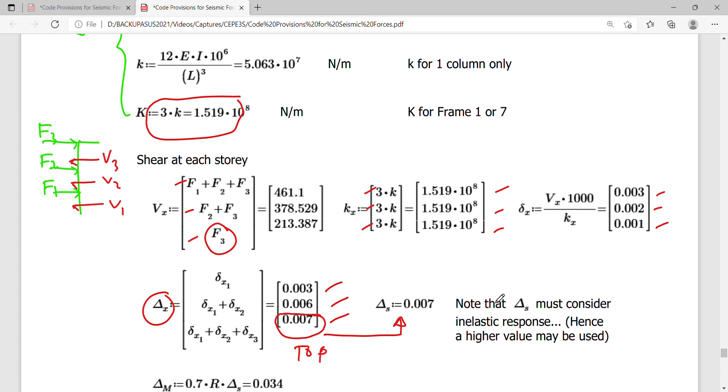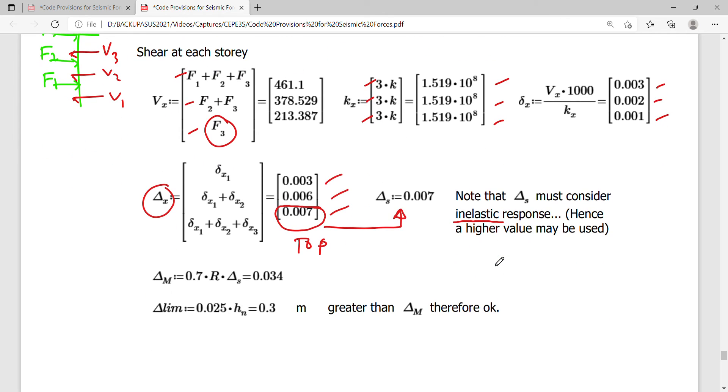I consider this as my delta S, which means delta S is the static elastic response. But take note that delta S must consider inelastic effect, because we may come up with buildings that crack during earthquake. Hence a higher value may be used, but for the purpose of just presenting a way of considering the elastic response on delta, this will be the one we're going to use for the computation of delta M or delta maximum.